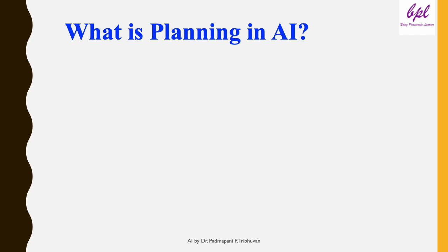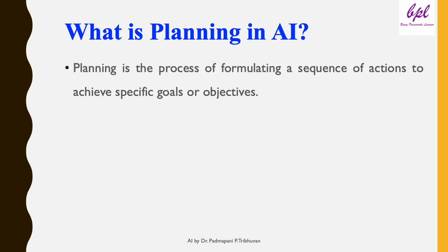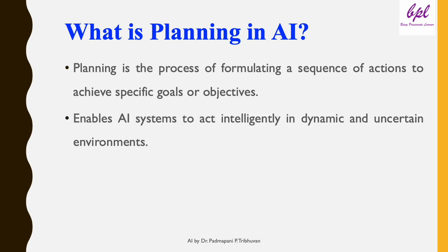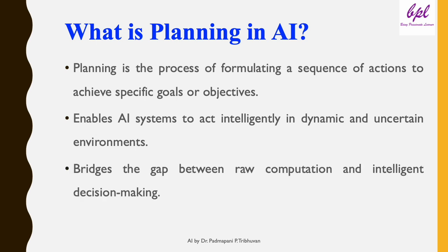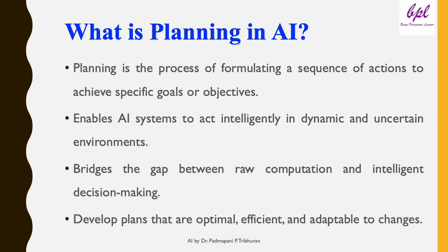So let's get started with what is planning in AI. Planning is a process of formulating a sequence of actions to achieve specific goals or objectives. It is a fundamental aspect of intelligent behavior and enables AI systems to act intelligently in dynamic and uncertain environments. It bridges the gap between raw computation and intelligent decision making, developing plans that are optimal, efficient, and adaptable to changes. Whether it's a robot finding its way through a maze, a system scheduling tasks, or an AI player in a game, planning plays a crucial role.